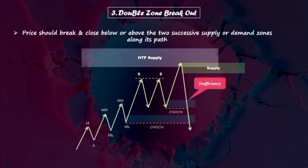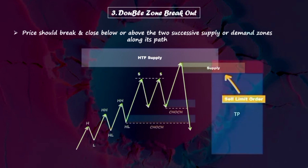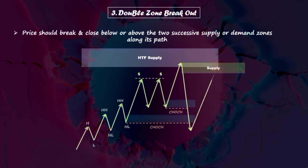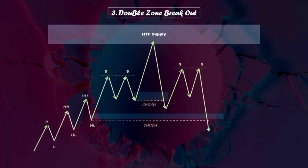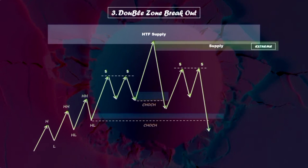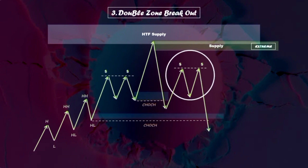Subsequently, a newly generated strong supply zone forms at the extreme. In this case, we can place a sell limit order at the extreme demand zone because the price has a great chance to return to fill the inefficiency, fulfill the orders, tap into the order block, mitigate the supply zone, and then push to the downside. Considering the concept of double zone breakout or even multiple zone breakouts into your trading will enhance your confidence, making you more certain about your trades. Now let's explore another possible scenario: the price couldn't break through the second demand zone with a single downside movement. Price broke through the last demand zone and created the supply zone at the extreme, then experienced a temporary pause and pullback but couldn't mitigate the extreme supply zone. Instead, it formed a liquidity pool by creating a double top.